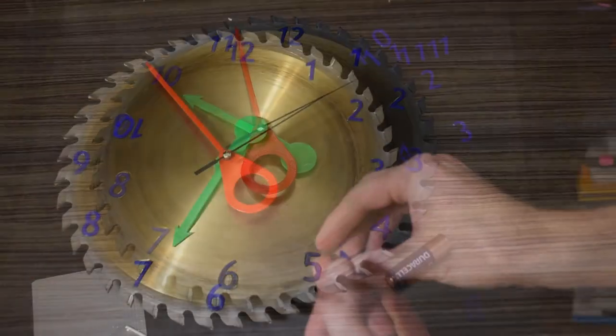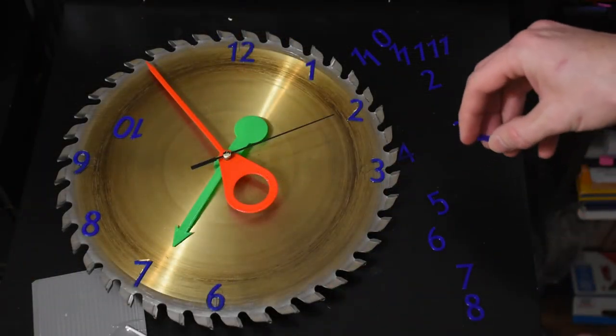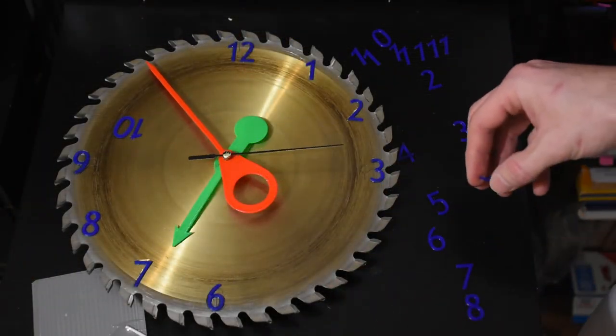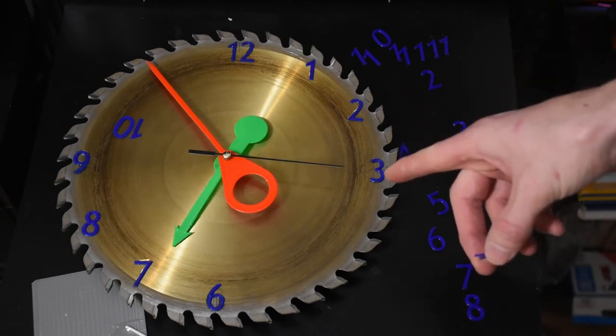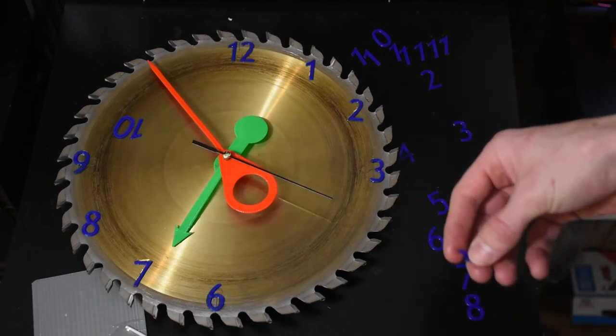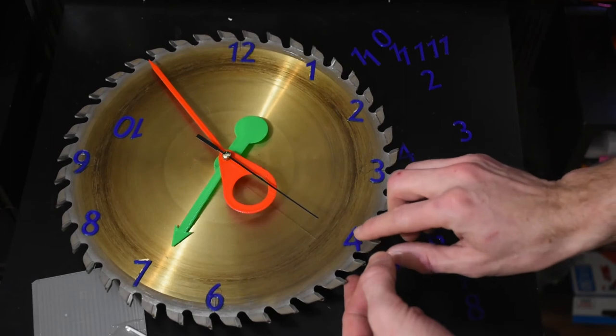Tick-tock. Now, I recommend that you get a blade with 60 teeth for obvious reasons, but this old blade only had 40 teeth, so it made it a bit harder to position the numbers.